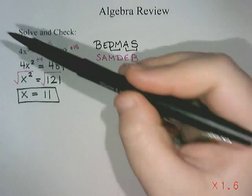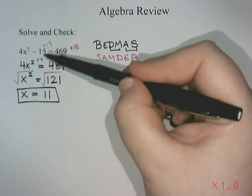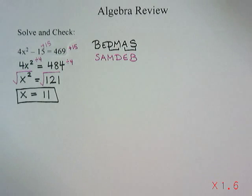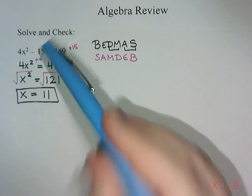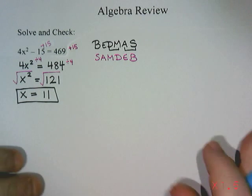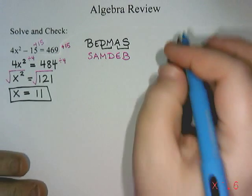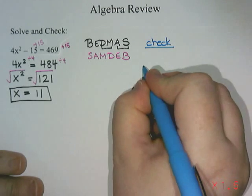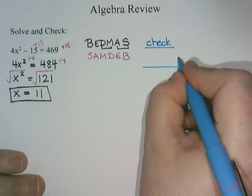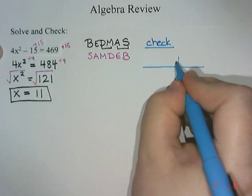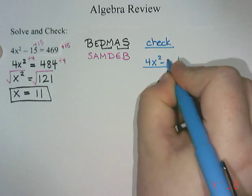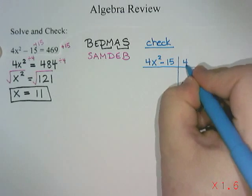If I take 11 and put it in, 4x squared minus 15 should equal 469 — and that's where the check comes in. Checking is where we take our answer, put it back into the equation, and see whether it's correct. I like to do that by making a T-chart, putting the left side of the equation on the left and the right side on the right.